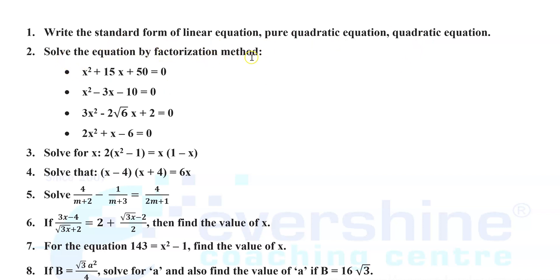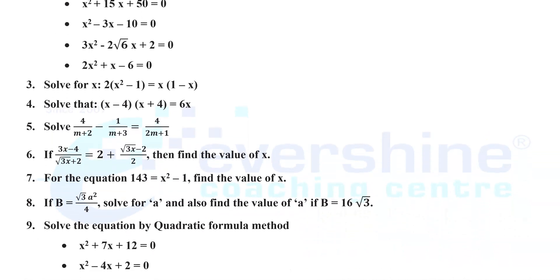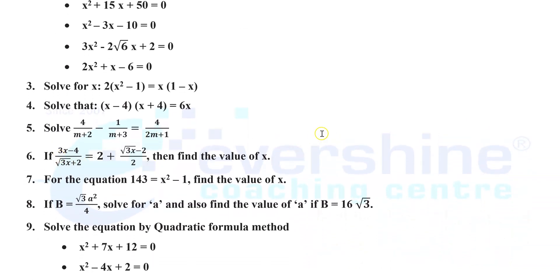Next, solve the equation by factorization method — I have given 4 options, you have to solve all 4. Next, solve for x where the equation is 2(x² − 1) = x(1 − x). Again, solve the given equation: 3x − 4 divided by √(3x), where 3x is under the same root, and √(3x) + 2 = 2 + √(3x) − 2 divided by 2. Then find the value of x.